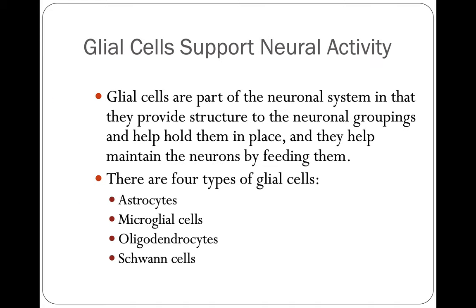Glial cells are part of the neuronal system in that they provide structure to the neuronal groupings, help hold them in place, and help maintain the neurons by feeding them. There are four different types of glial cells: astrocytes, microglial cells, oligodendrocytes, and Schwann cells. Oligodendrocytes and Schwann cells have to do with myelin and the speed of moving information from the dendrite to the axon terminal. The astrocytes and microglial cells have to do with structure — they're the ones that hold the cells in place.